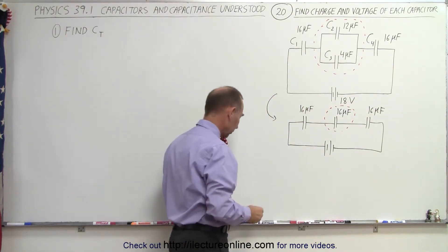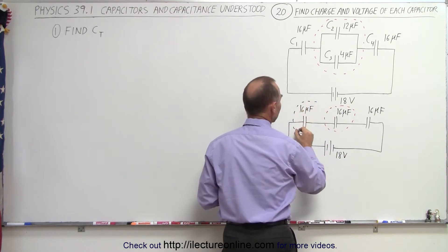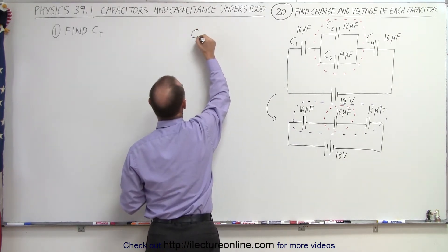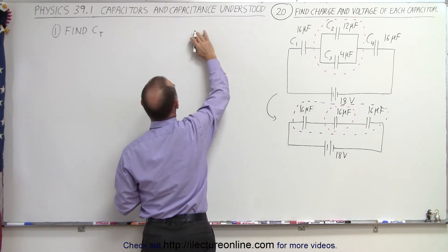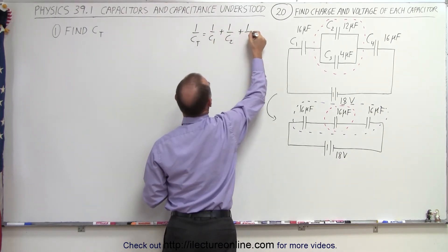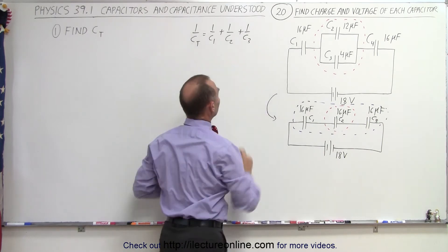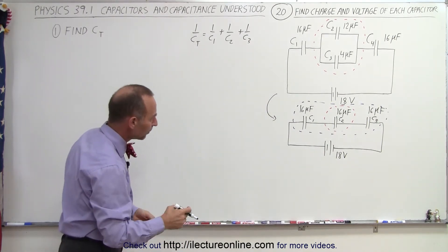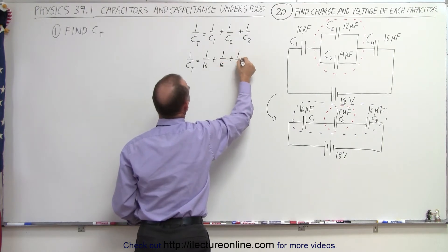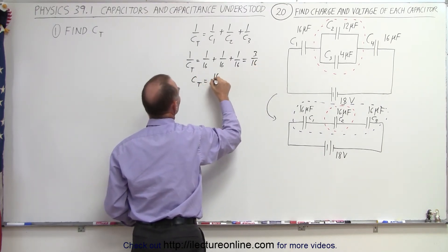Now we're going to add these three together — this is still 18 volts. These three are in series. When you add capacitors in series, you must use the one-over rule. So 1 over C total is equal to 1 over C1 plus 1 over C2 plus 1 over C3. So that's 1 over 16 plus 1 over 16 plus 1 over 16, which equals 3 over 16.